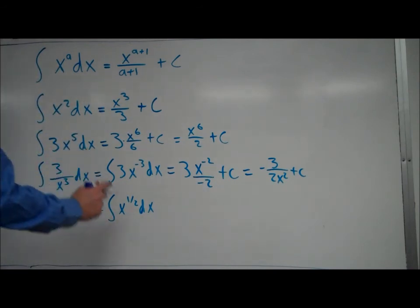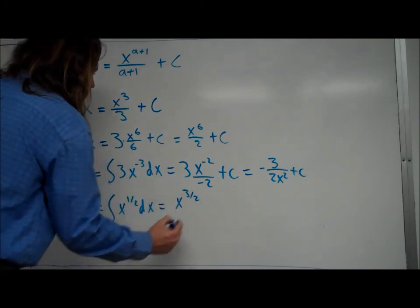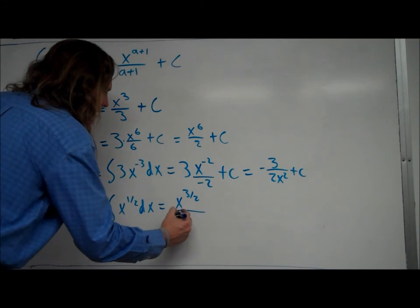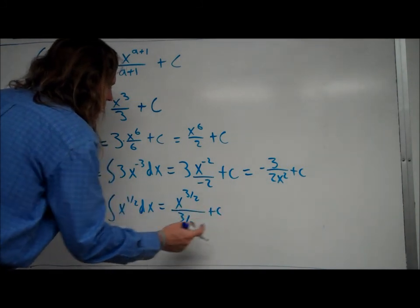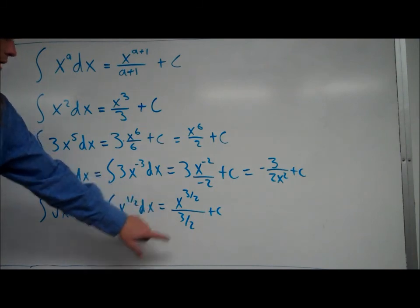so we go ahead and add 1 to the exponent, so it's going to end up being x to the 3 halves, and then we divide by that, 3 halves, plus c. Now usually instead of writing it like that, because it looks kind of ugly,